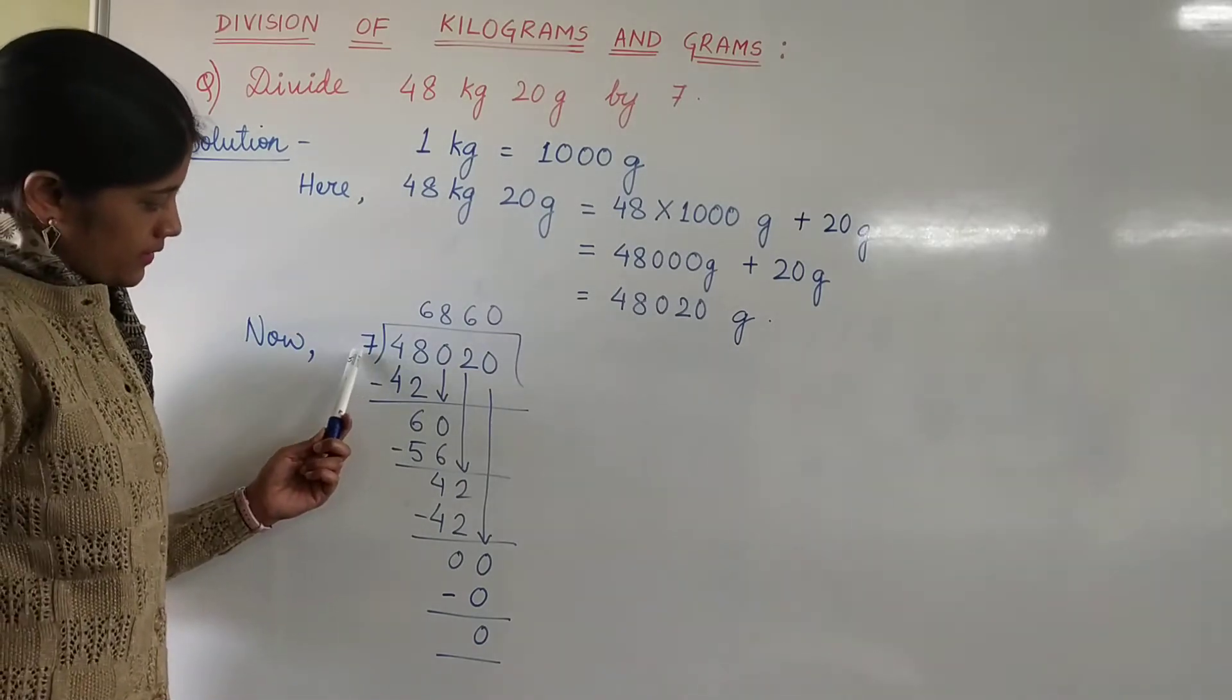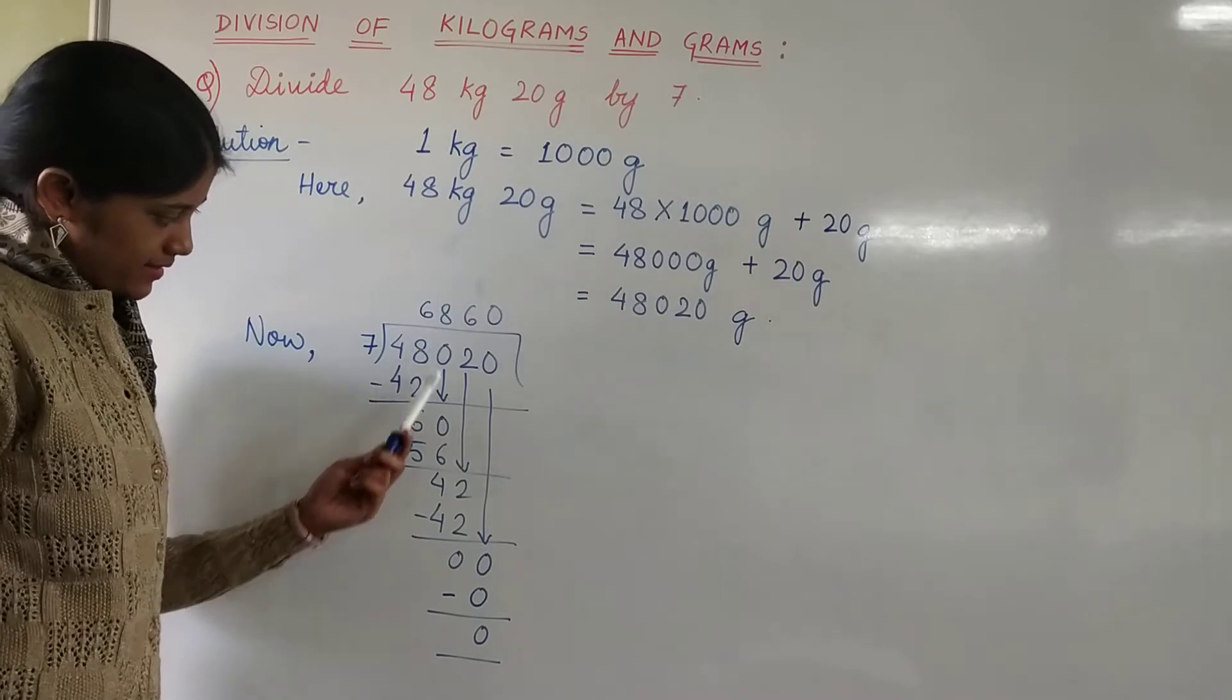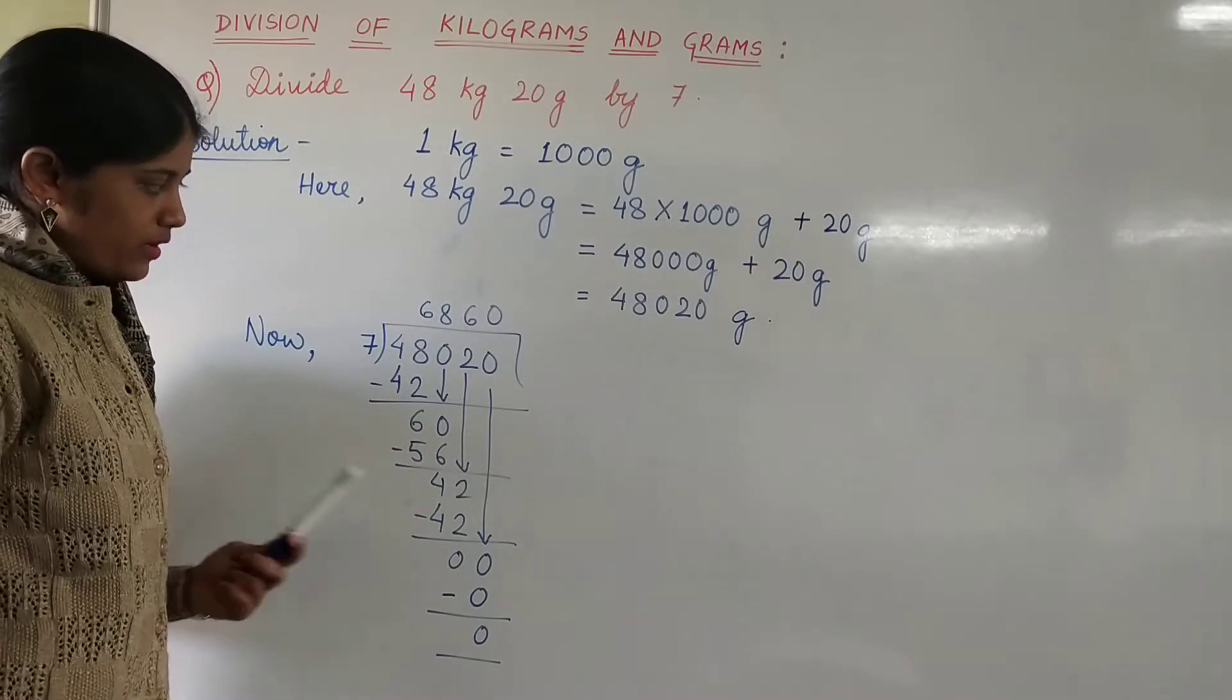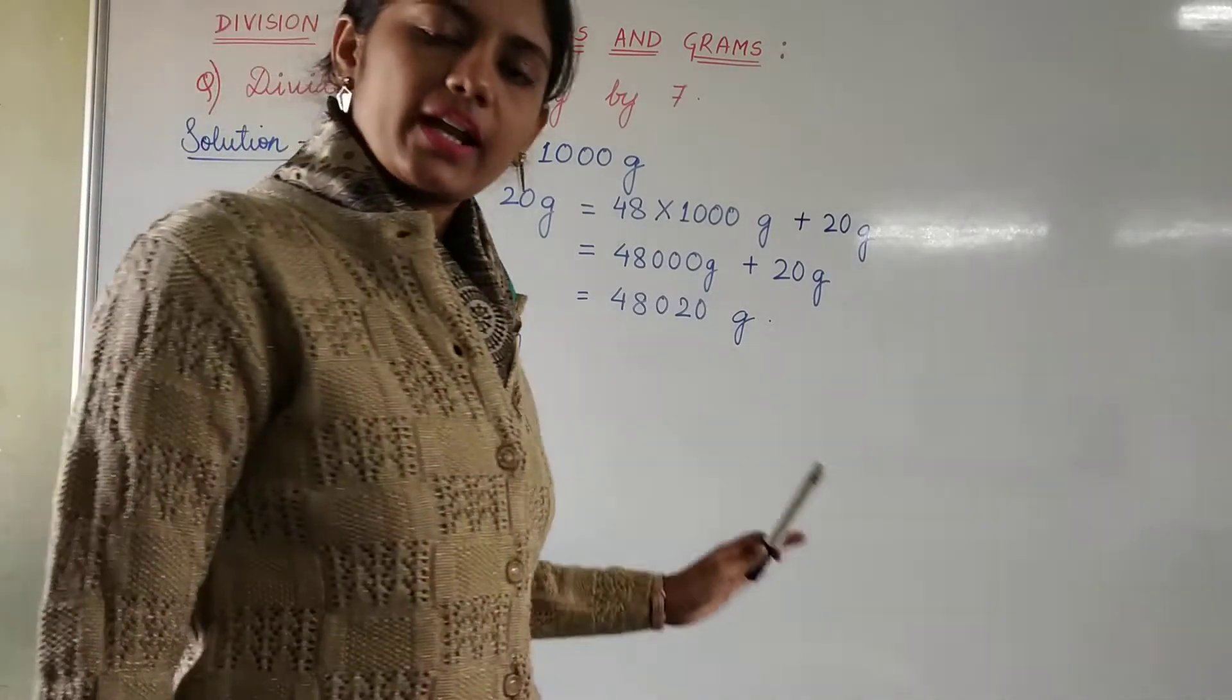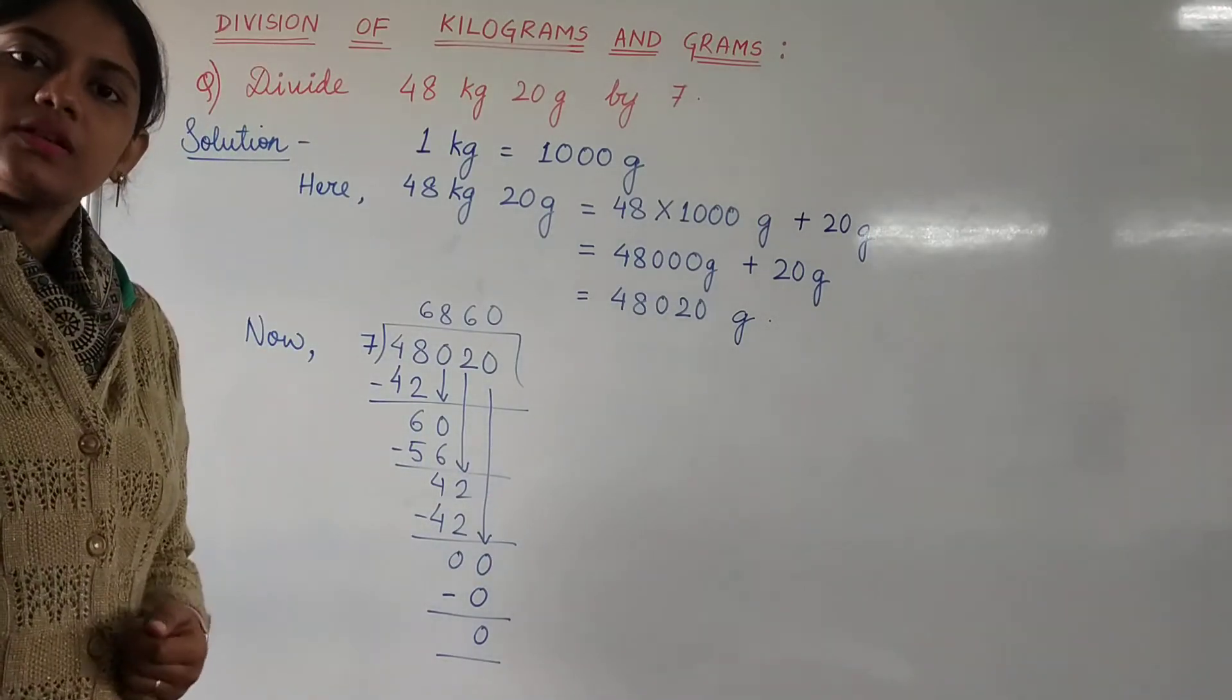7 sixes are 42, subtract. 6, 0 comes down. 7 eights are 56, subtract. 4, 2 comes down. 7 sixes... 0. The division is completed. We carry out division in the same way as we carry out simple division.